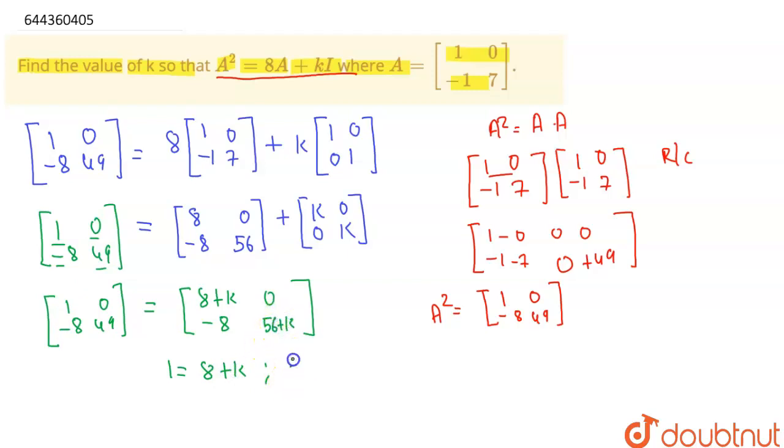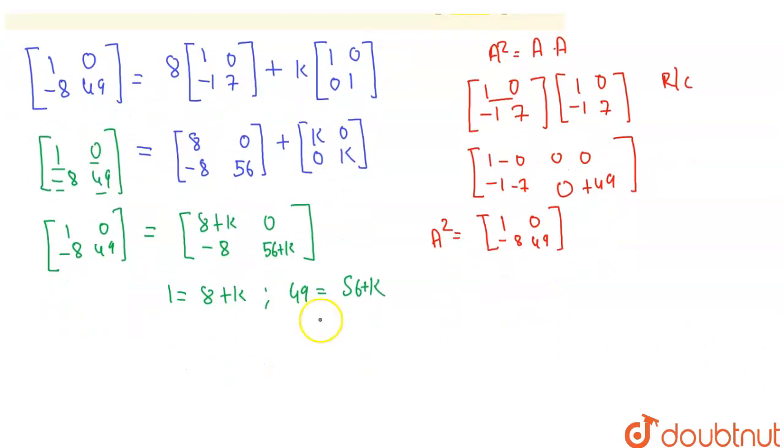And 49 = 56+k. So if I solve this, I will get k = -7, and here k is also equal to -7. Clear up to now students. Thank you.